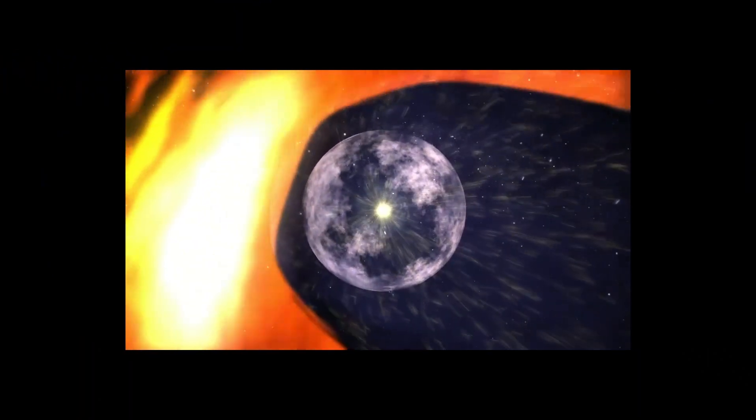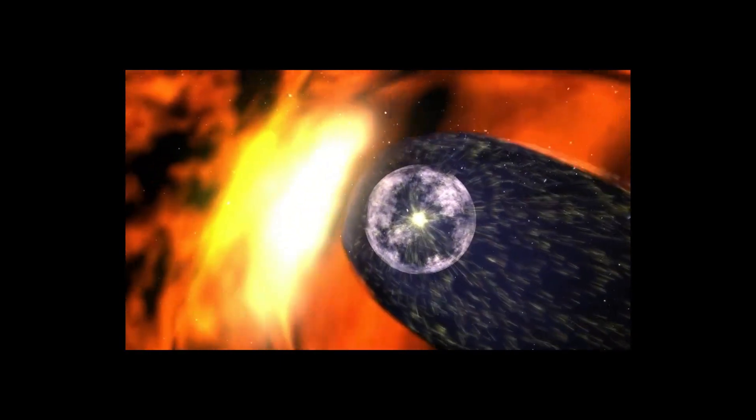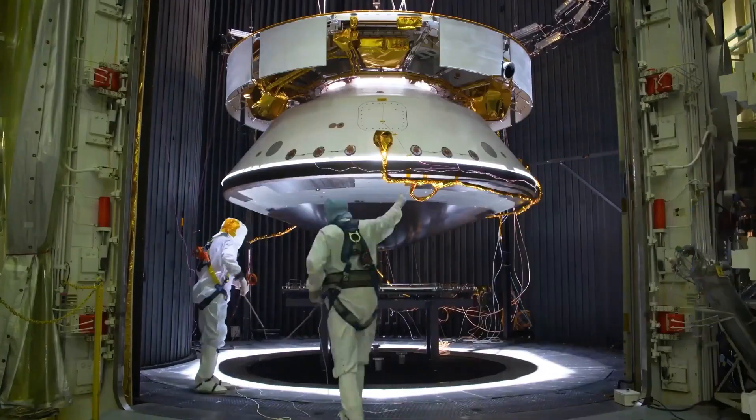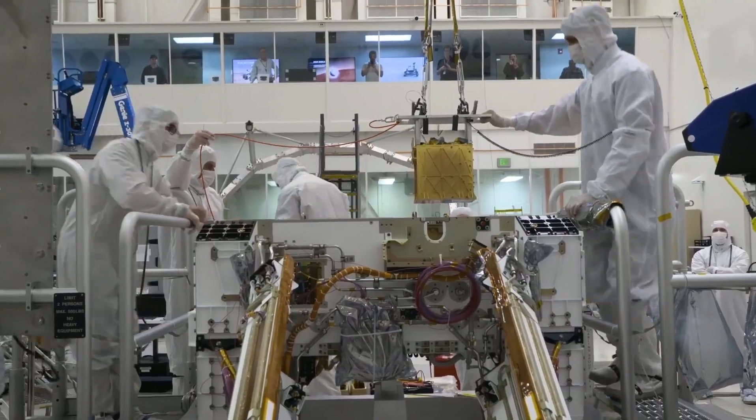Three years ago, the mission's engineers had to shut off the heater for the cosmic ray detector, a crucial instrument for determining the heliopause transit. Despite everyone's expectation of its failure, the instrument kept functioning even in extreme temperatures that were well beyond its tested limits, a truly astounding feat.